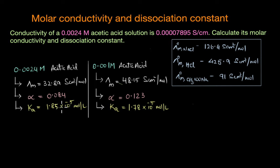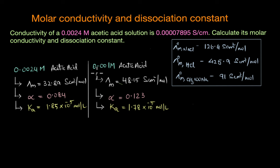This small difference in Ka can be attributed to experimental conditions or experimental error. Broadly, Ka remains constant. This gives us a small peek into the concept of how molar conductivity changes with concentration of an electrolyte.